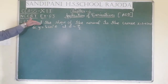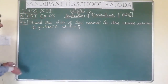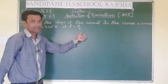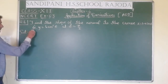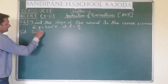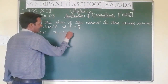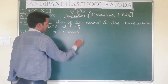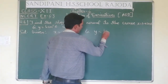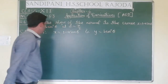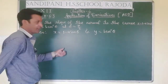Now we are discussing question 6: Find the slope of the normal to the curve x = 1 - a sinθ and y = b cos²θ at θ = π/2. In the solution, what is given here? x = 1 - a sinθ and y = b cos²θ. First of all we have to find dx/dθ and dy/dθ, because both are functions of θ only.